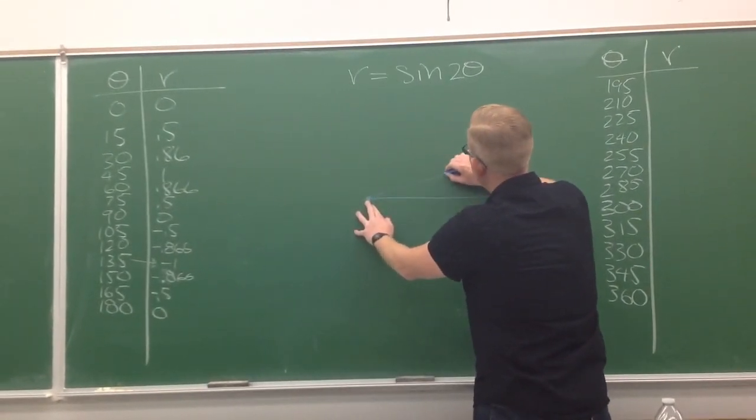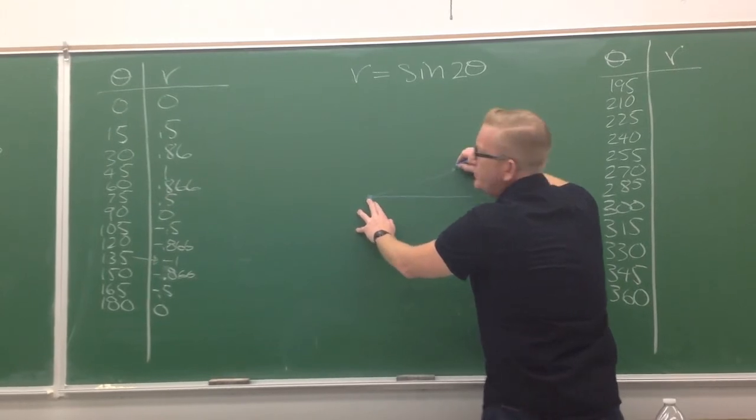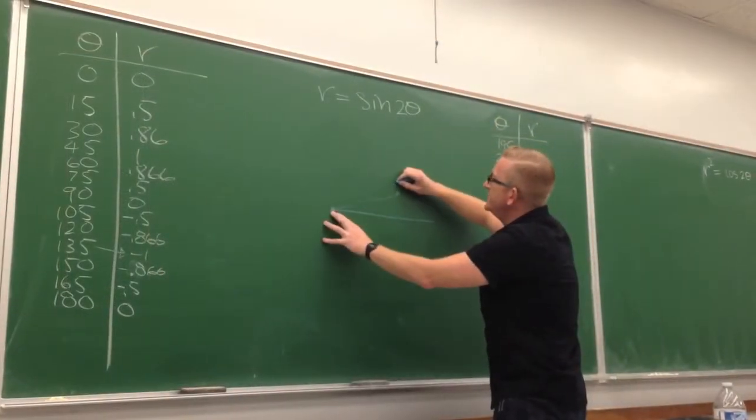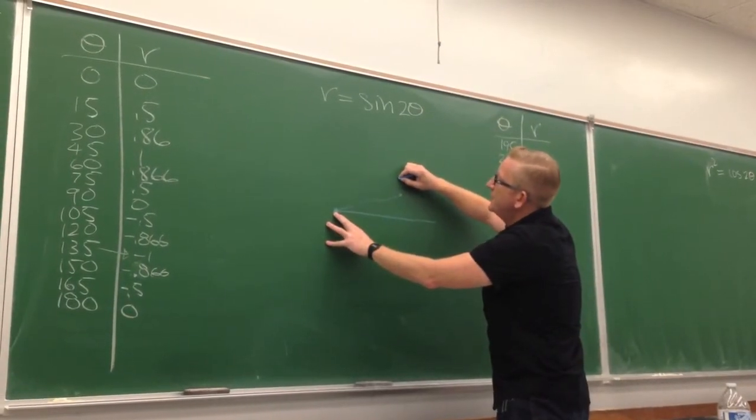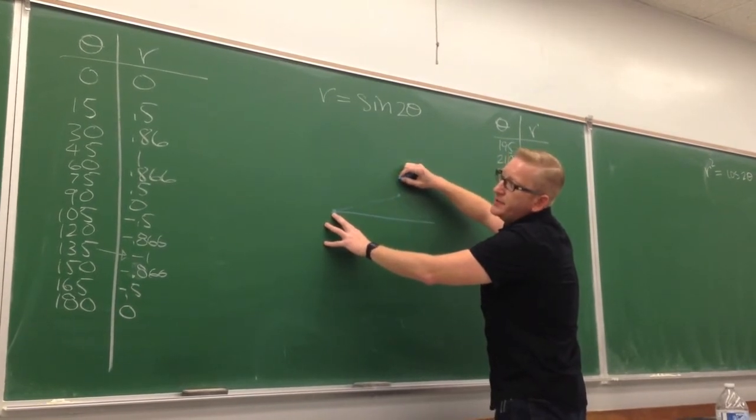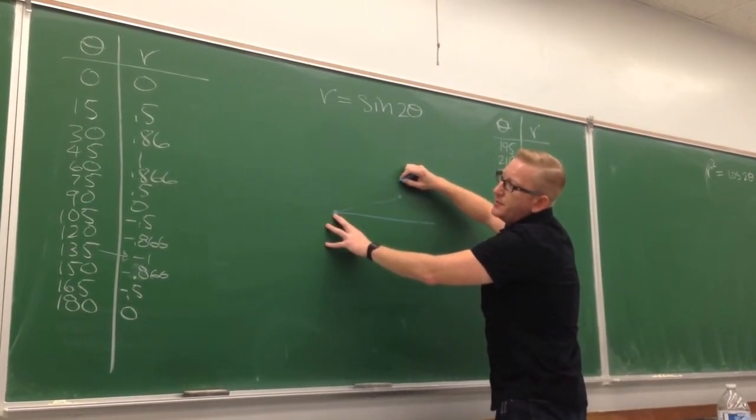So you rotate 15 degrees and you go out half of one unit, and then you're at 30 degrees and you're 0.68, and then you're 0.86.